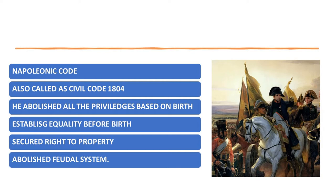The reforms of the Napoleonic Code — for your exam you have to write five points. The first point is: he abolished all privileges based on birth. Privileges means facilities which were given only to the clergy and nobility groups.